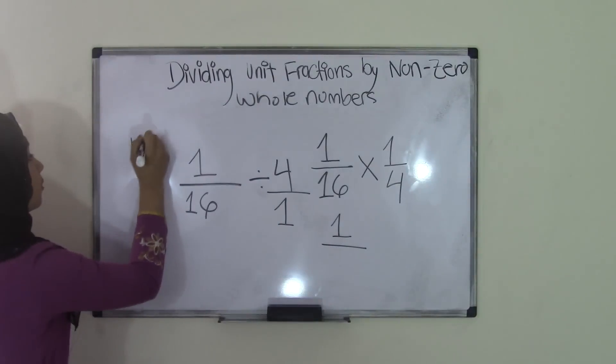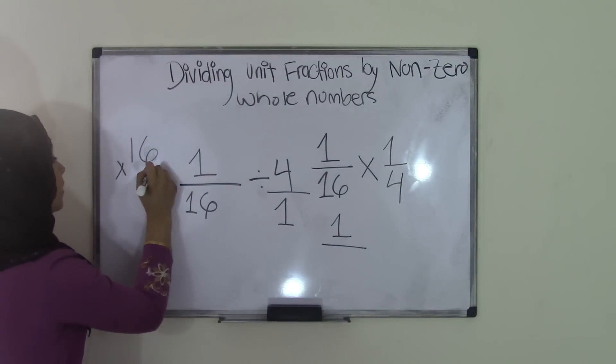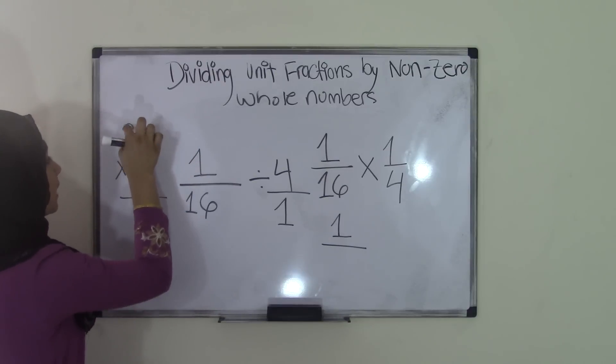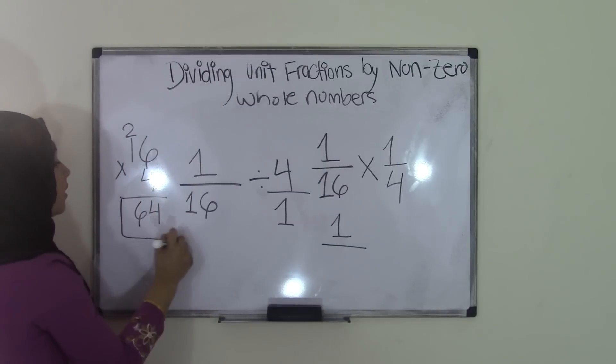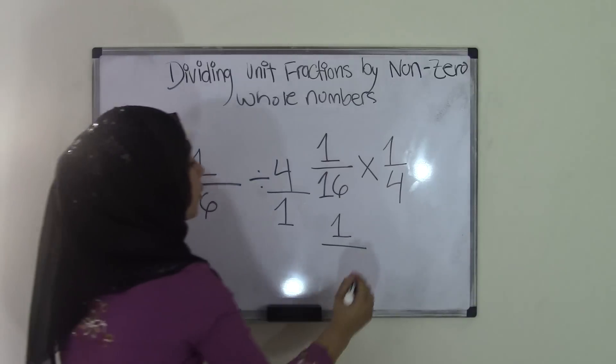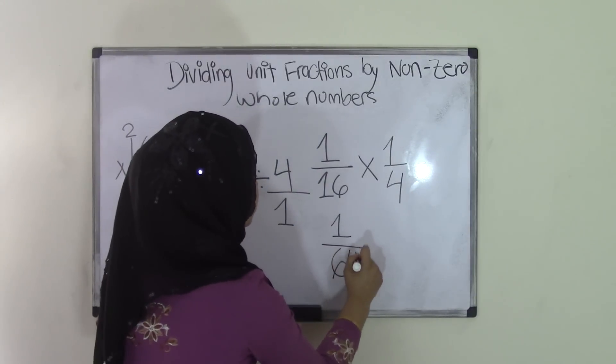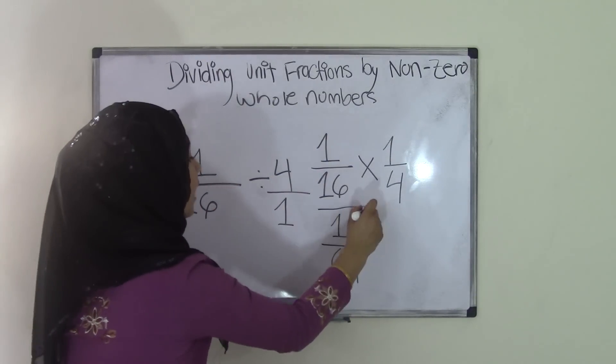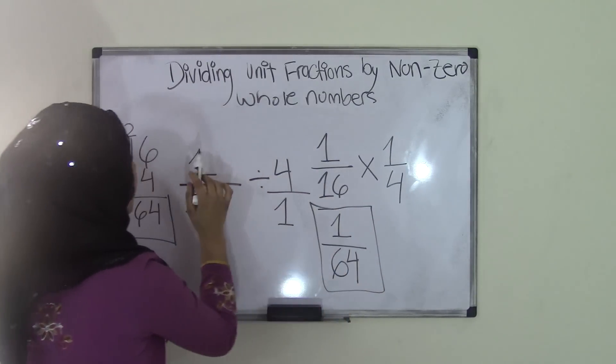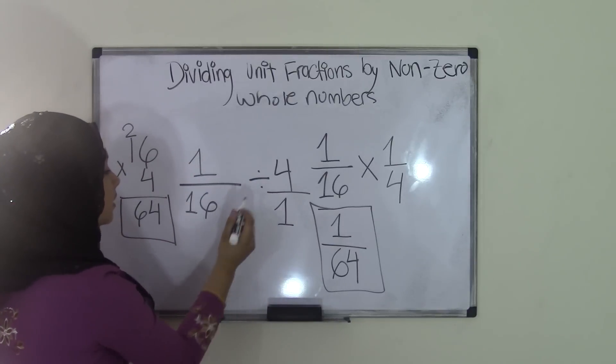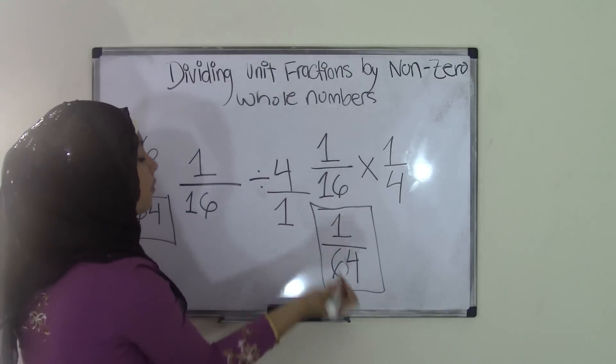So if you come over here and do 16 times 4, 6 times 4 is 24, bring over the 2, carry the 2, sorry, 4 times 1 is 4, plus the 2 is 6, we have our product of 64, and our denominator becomes a 64. So that means the quotient for our original problem, 1 over 16 divided by 4 over 1 equals 1 over 64.